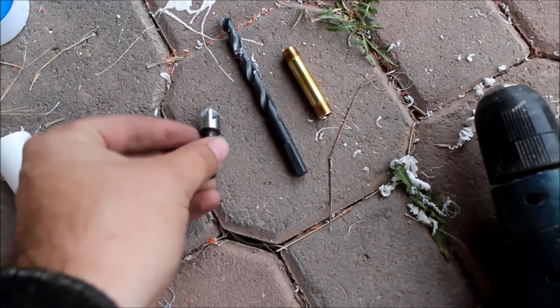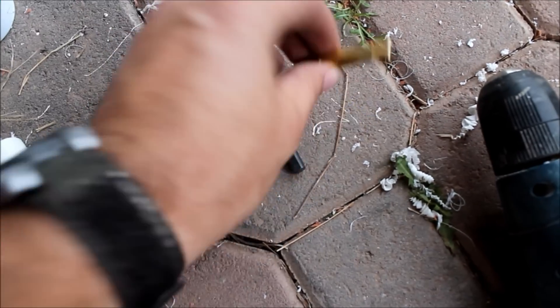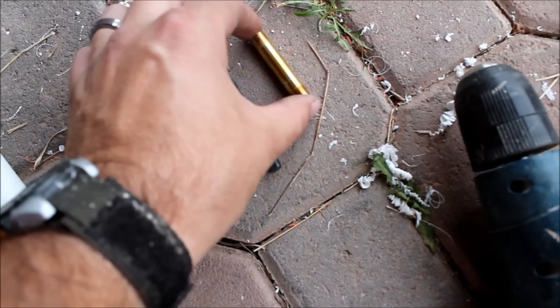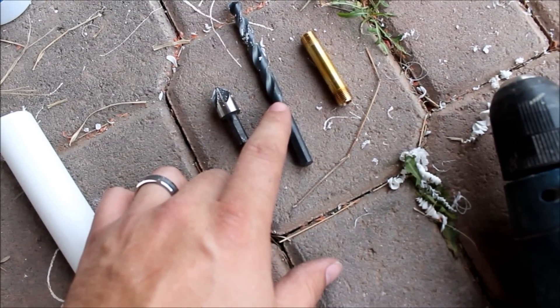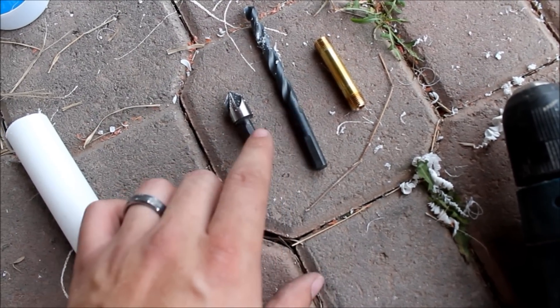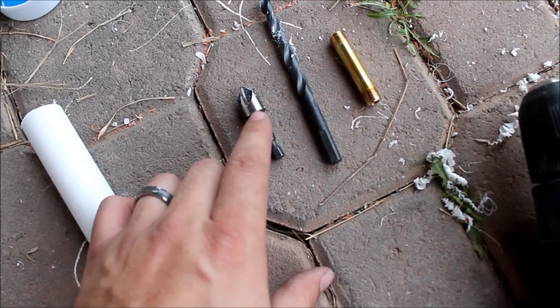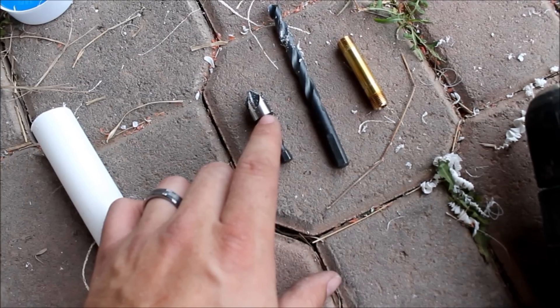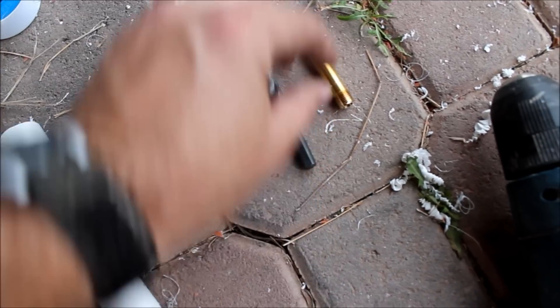So what I did is I drill a hole first with my 5/16 bit, I widen it just a little bit with my countersink bit, and that allows this 1/8 MIP brass nipple to start a bite, to grab into the PVC.